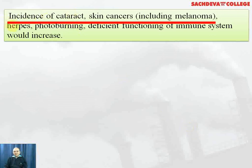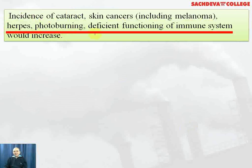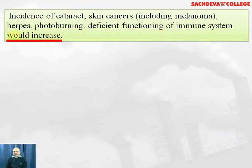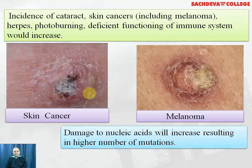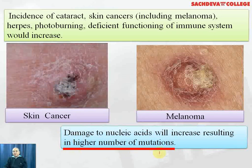The incidence of cataract, skin cancer including melanoma, herpes, photo-burning and deficient functioning of the immune system would increase. You can see images of skin cancer and melanoma, all caused by ultraviolet radiation. Damage to nucleic acids will also increase, resulting in a higher number of mutations.